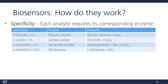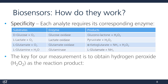Each of them requires a different enzyme for the appropriate reaction to take place: glucose oxidase for glucose, lactate oxidase for lactate, glutamate oxidase for glutamate, and glutaminase for glutamine. The key for our measurement is to obtain hydrogen peroxide, or H2O2, as one of the reaction products. We'll explain this a little more in the next two slides.